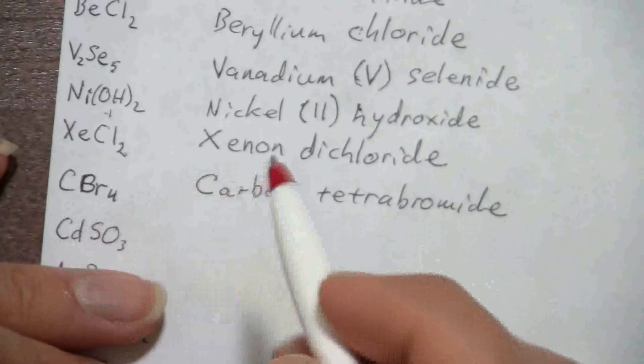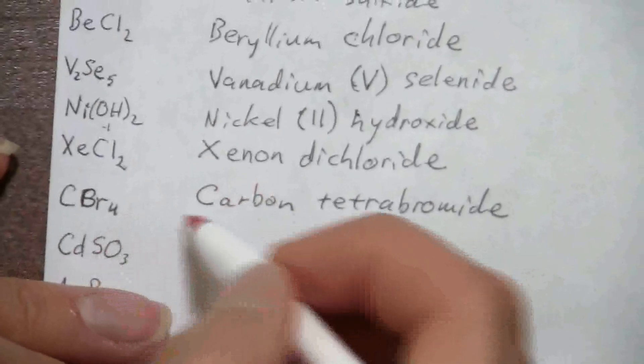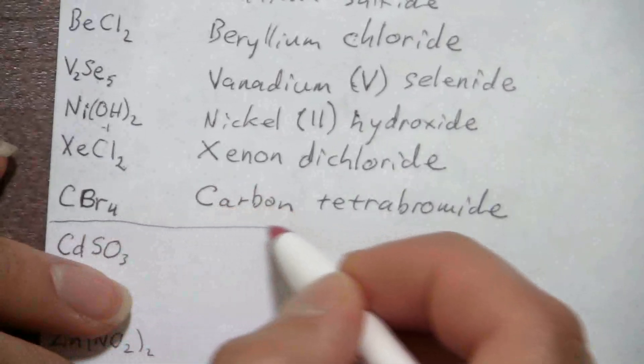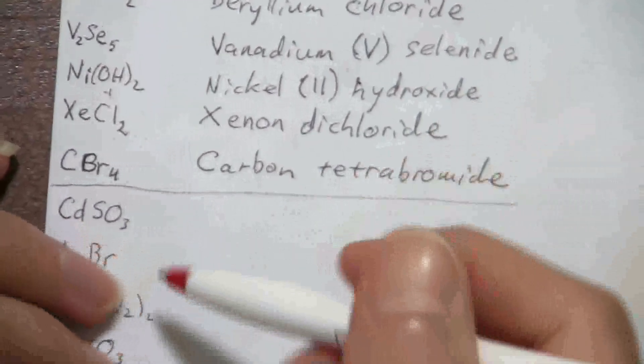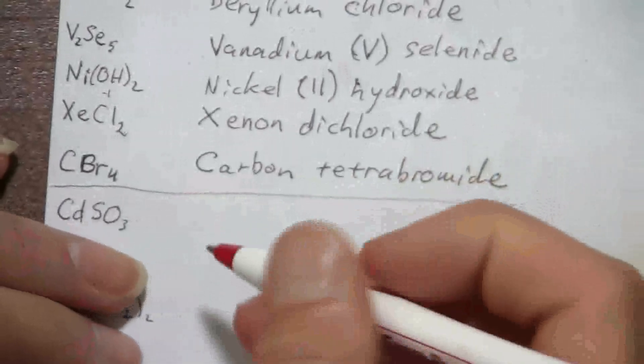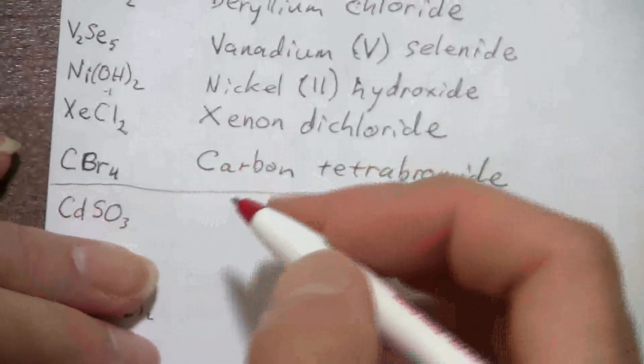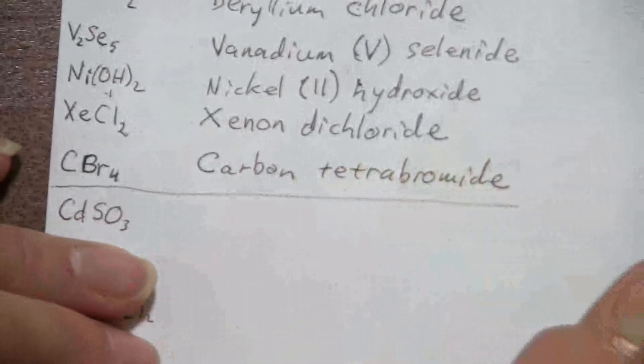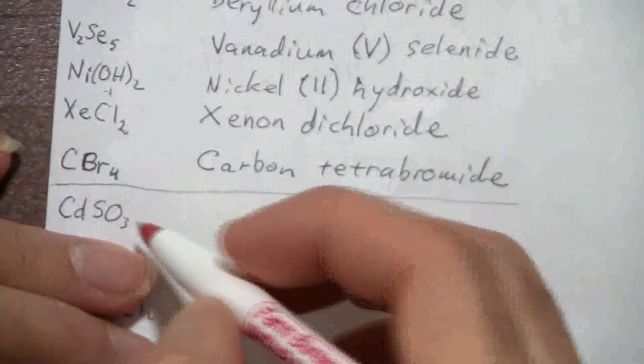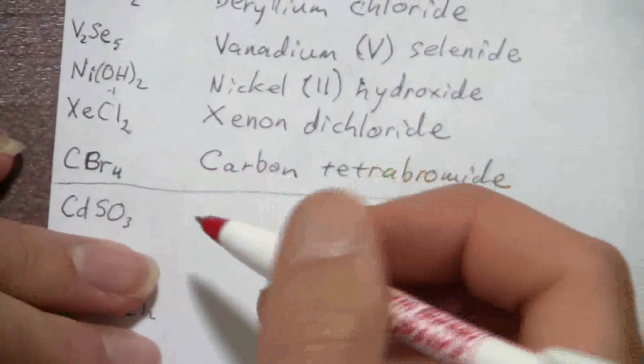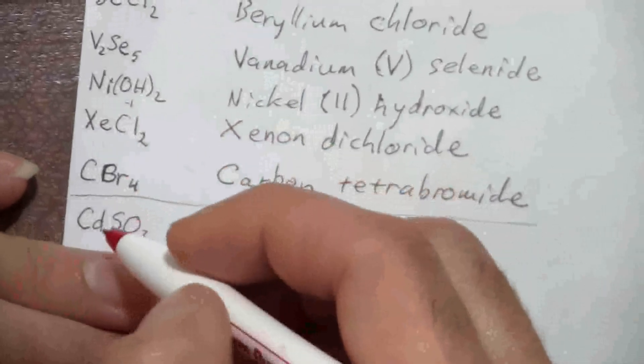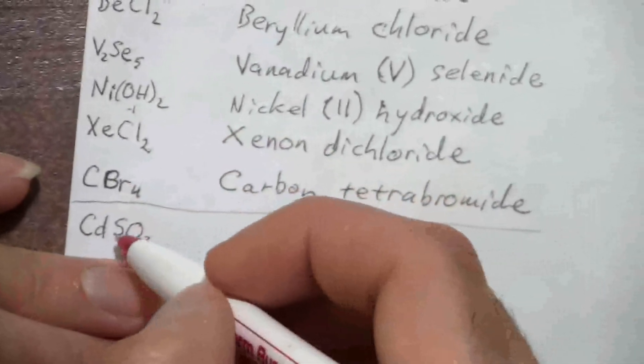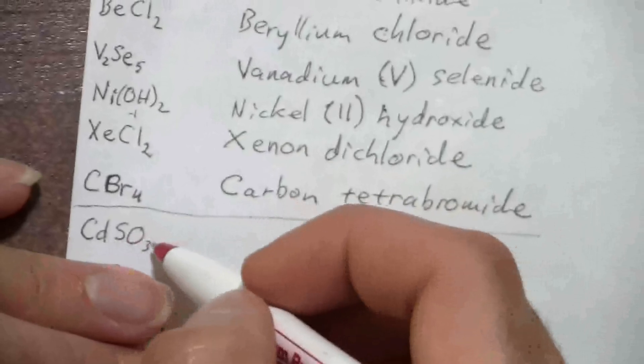Here we have cadmium. I could kind of make a division here. The remaining ones we have will involve, for the most part, less common ions. But some of these are still very important to know, they're just somewhat less common than the hydroxide or the sulfate that we might see. So here we have cadmium and this is sulfite.